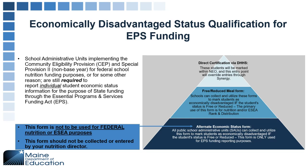Once again, the ESEA rank and distribution information is only determined using the free and reduced lunch form — not the alternate economic status form. The alternate economic status form is only for EPS funding purposes. That's the focus of today's webinar.